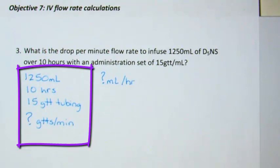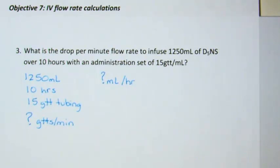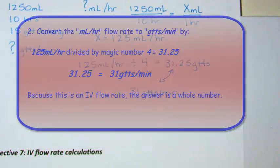Remember, whenever the question asks for drop per minute flow rate, you must know the milliliter an hour flow rate in order to convert this. Once you have the milliliter per hour flow rate by showing 1,250 milliliters over 10 hours and solving for x milliliter per hour, x is equal to 125 milliliters per hour.